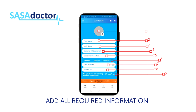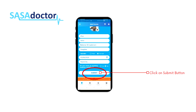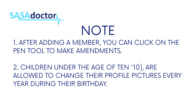Note: leave the national ID field blank while adding those under the age of 18 years. Add relationship, gender, date of birth, town or city, and remember to cite if they have any existing medical conditions. Once all information is added, click on the submit button. After adding a member, you can click on the pen tool to make any amendments. Children under the age of 10 are allowed to change their profile pictures every year during their birthday.